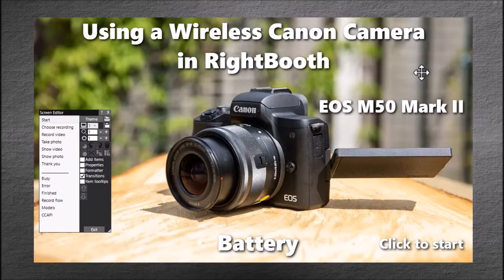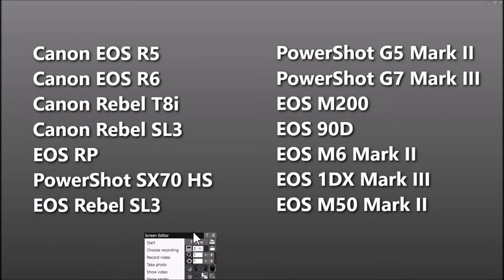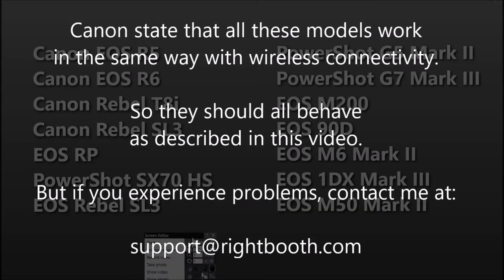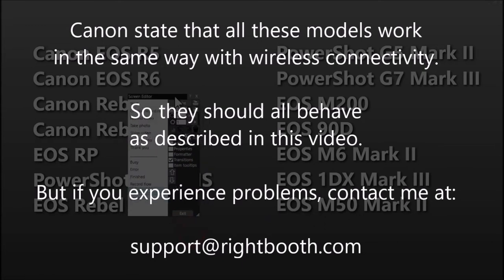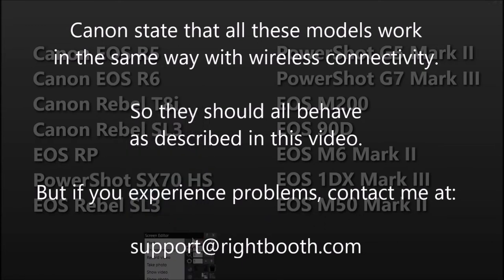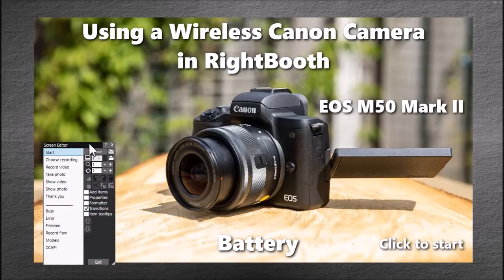In this video I'm going to be showing you how you can set up and use a wireless Canon camera in Right Booth. For the purposes of this video I'm going to be using an EOS M50 Mark 2, but you're not stuck with just the M50 — you can also use other models. Here's a quick look at the full range of Canon wireless camera models that will work with the method I'm going to show you today.